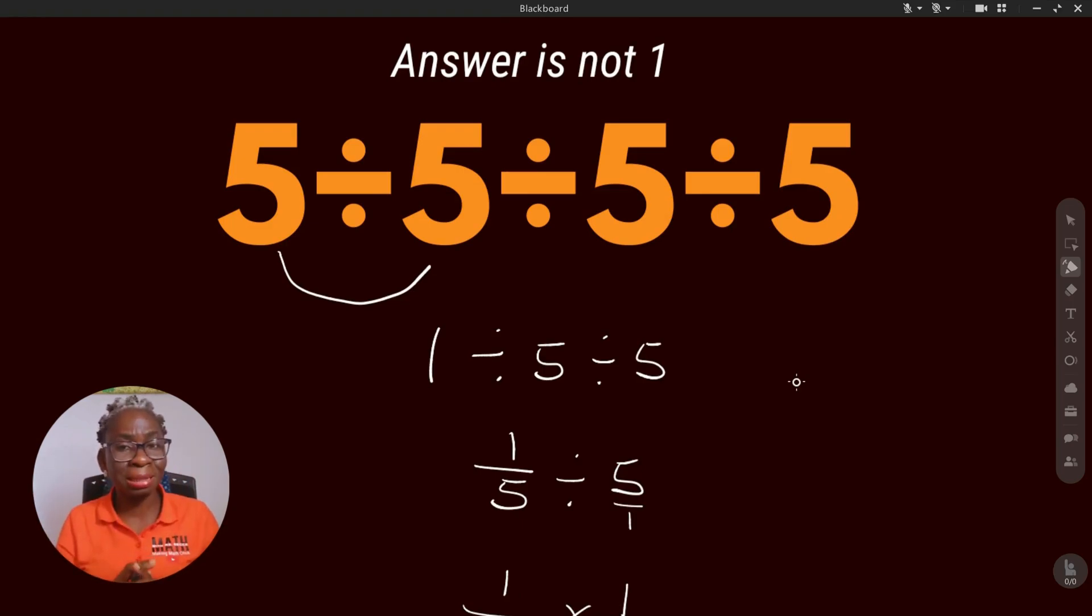So the correct answer to this question is 1 over 25 and not 1. So whenever you come across questions like this, make sure to take a look at it very well. Look at it before you start solving.